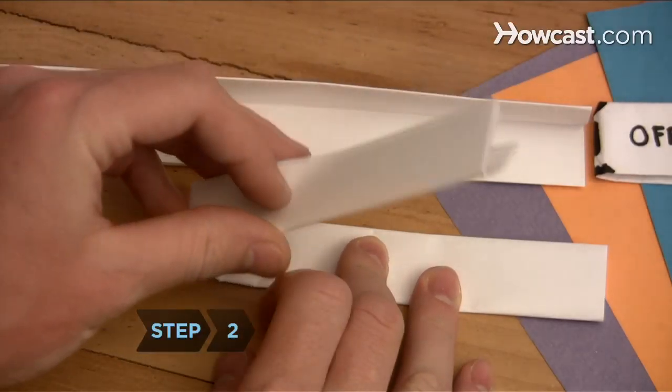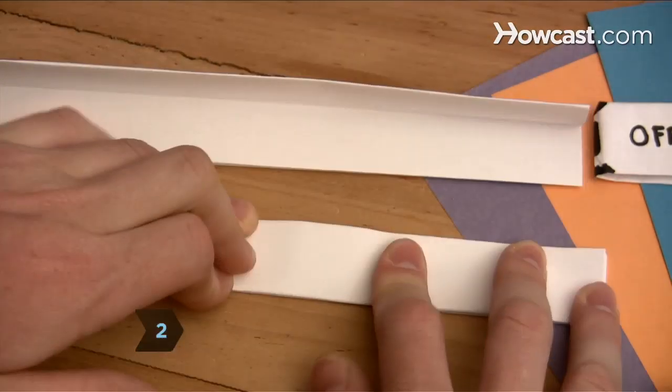Step 2. Create the barrel of the gun by folding one of the folded sheets in half crosswise.